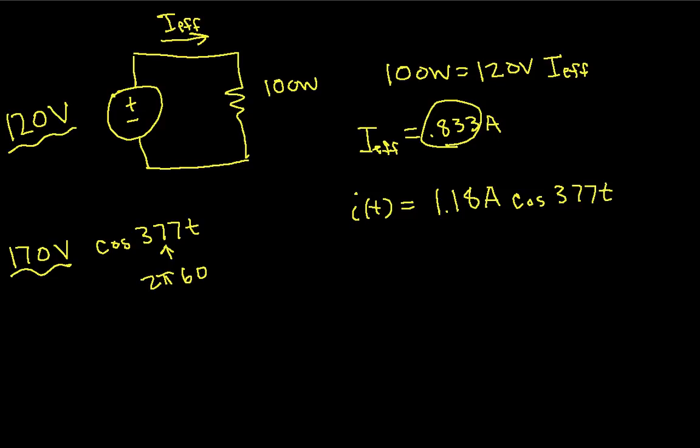So there you have it. We've introduced the idea of RMS voltage and current, explained why it's defined the way it is, shown that for sinusoids the RMS value is the peak value divided by the square root of two, and worked through an example showing how it's used. Hopefully you found this useful.